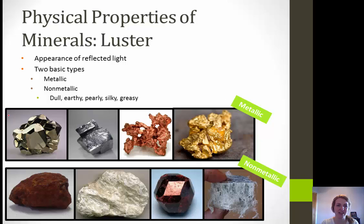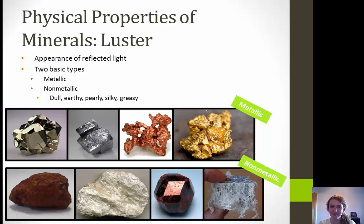Starting with the simple ones — metallic. Up here we have pyrite, and you can see how it would look like a metal reflecting light. Next we have some galena — again, silver and shiny. Then we have some copper, which is metallic. And lastly, my personal favorite, we have some gold. Moving down to the non-metallic examples, those two right here would be our dull and earthy ones. This example of garnet I would say is resinous or even vitreous. And this last one I would say is fibrous or possibly silky.